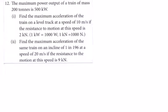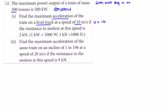Question 12: we're given the max power output of a train of mass 200 tons as 500,000 watts. The mass is 200 tons, which is 200,000 kilograms. Find the max acceleration of this train on a level track at a speed of 10 m/s. There is resistance to motion at this speed of 2 kilonewtons, that's 2,000 newtons. Drawing a diagram of the train, resistance to motion is 2,000 newtons opposing motion.